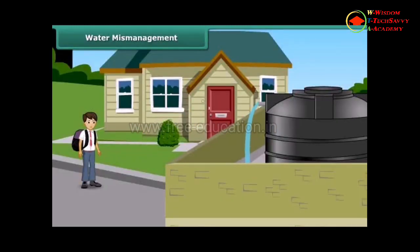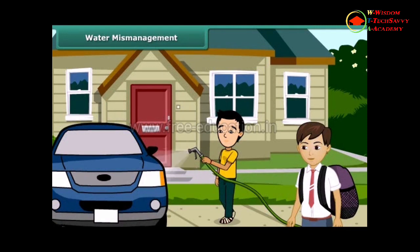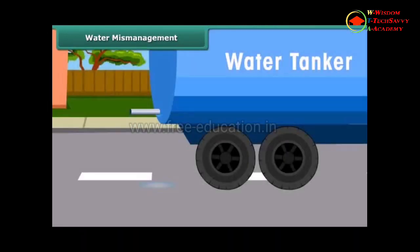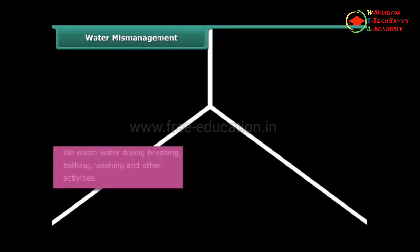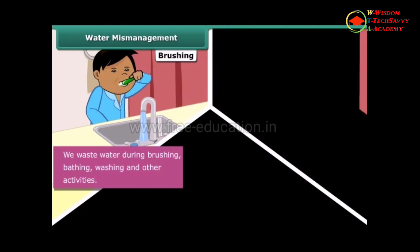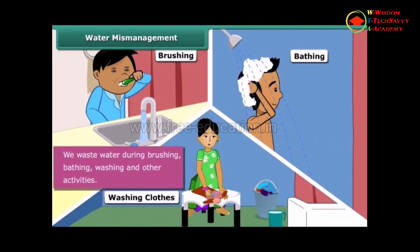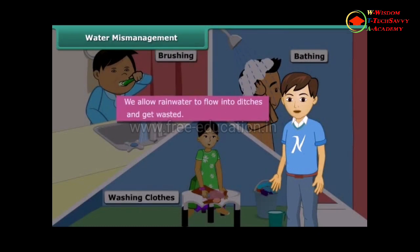On your way to school, you notice water overflowing from the overhead tanks in your locality. You see people using running water to wash their cars. You notice water leaking from a water tanker. All of us, knowingly or unknowingly, waste water during brushing, bathing, washing, and other activities. We allow rain water to flow into ditches and get wasted. Fresh water is no doubt renewable, but it is finite and gets depleted by mismanagement and indiscriminate use.